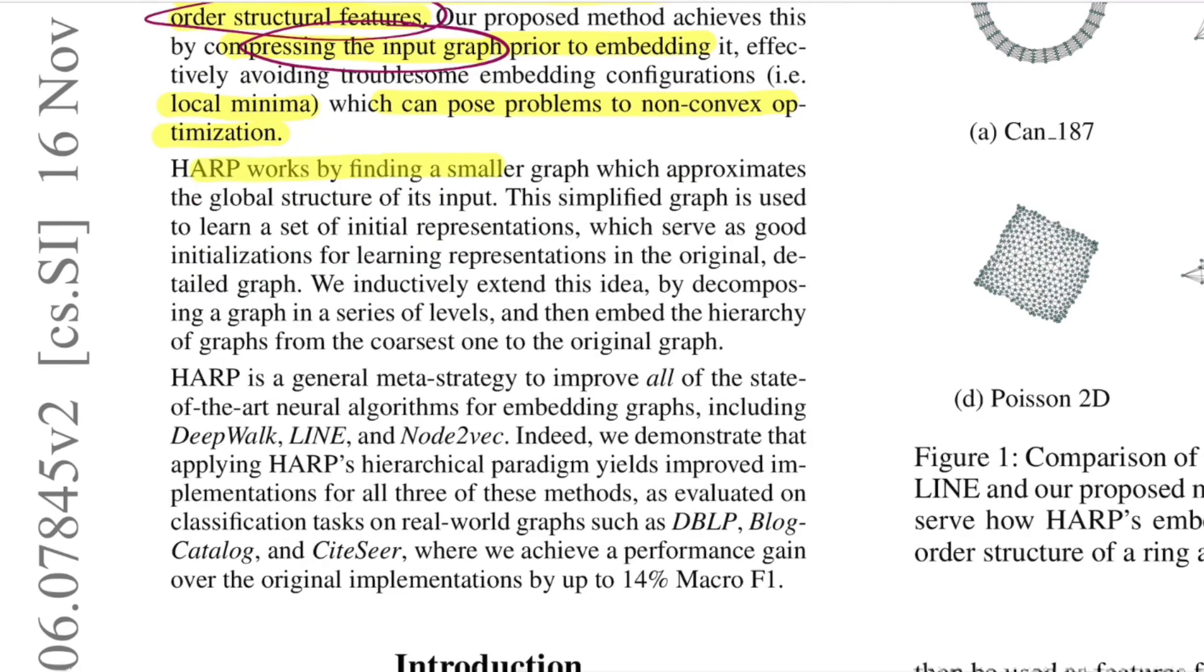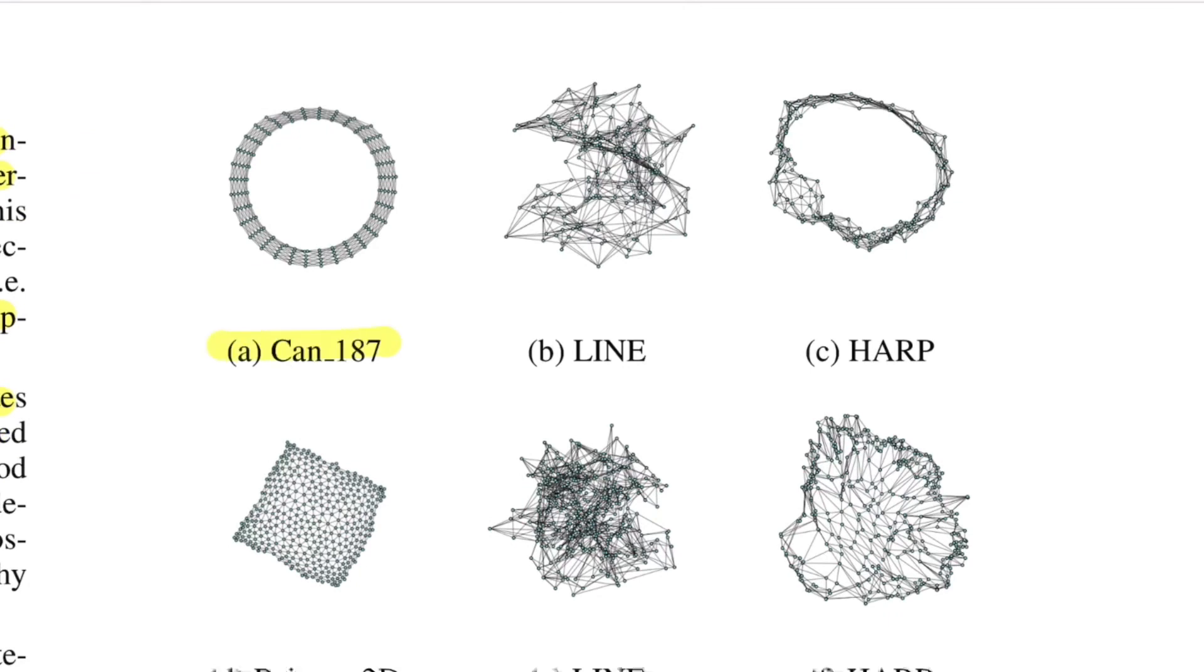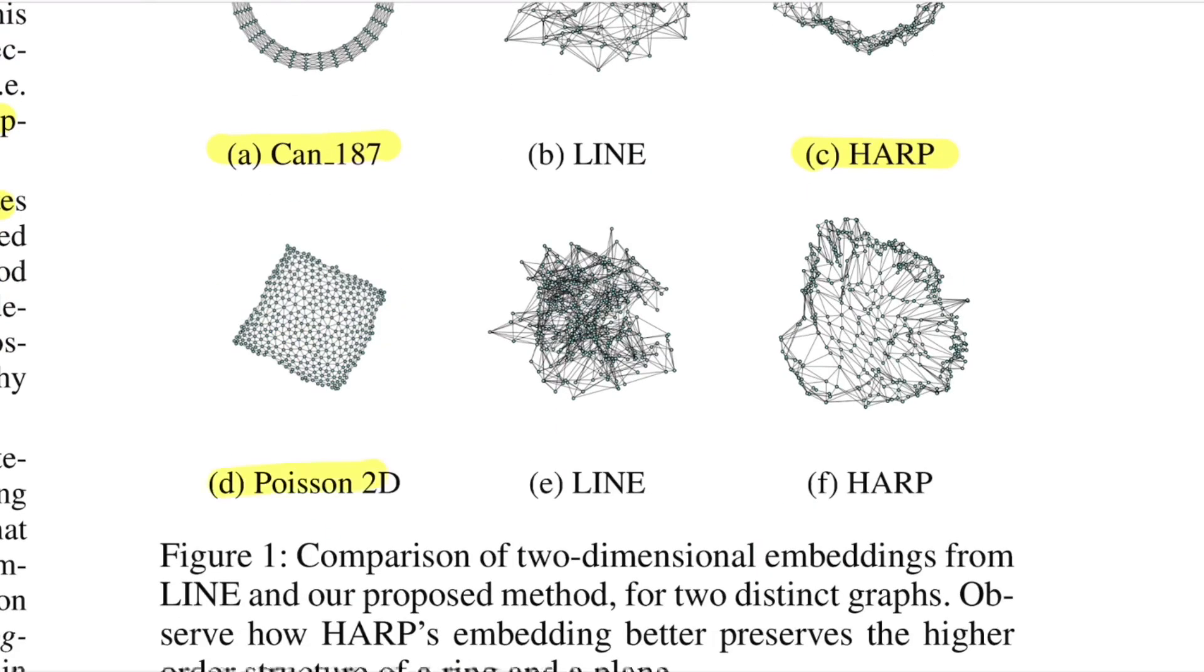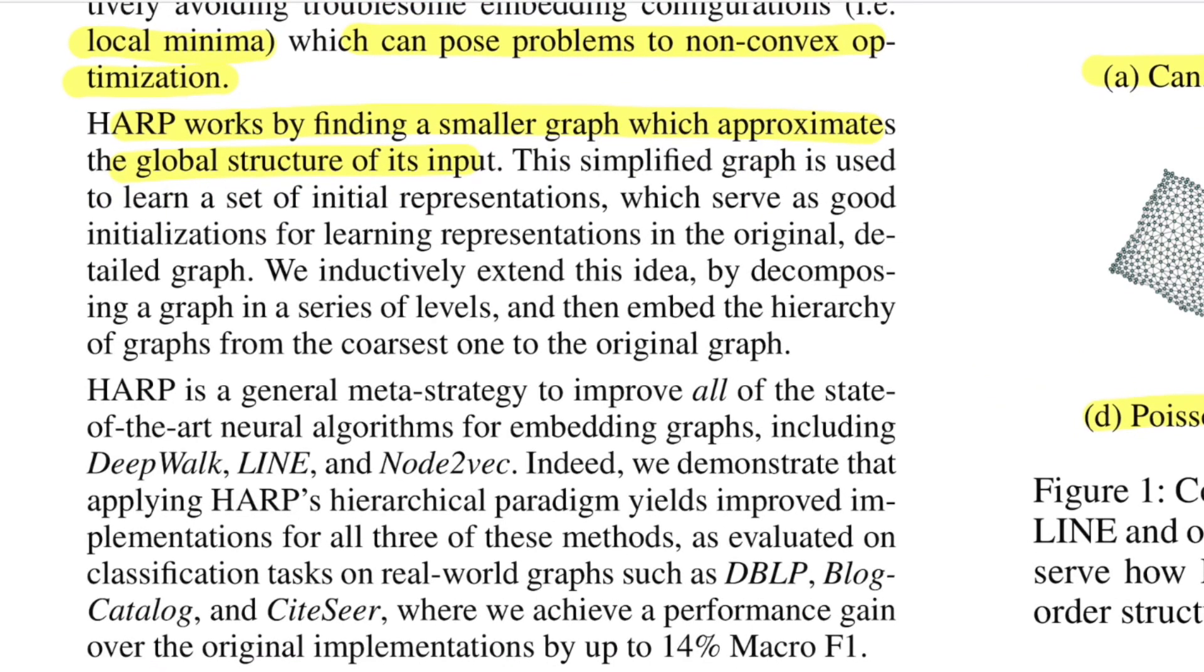HARP works by finding a smaller graph which approximates the global structure of the input. As you can see in this figure, if this was the original graph with a ring architecture, HARP would essentially reduce the number of nodes and edges from the original graph yet retain the global structure which is of a ring. Similarly, if you see something that resembles a square, HARP is relatively closer to a square distribution compared to other methods such as LINE.